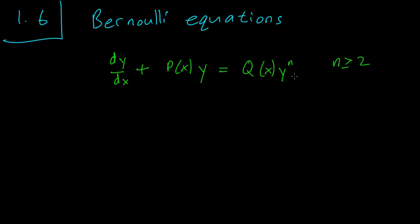So first thing to do is to divide both sides by 1 over y to the n. So we have dy/dx times 1 over y to the n over here plus p(x) times y raised to the 1 minus nth power over here and here just Q(x).